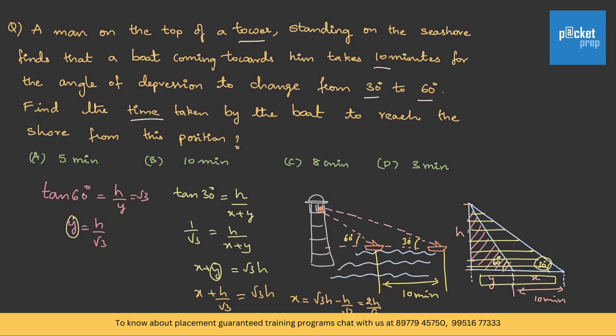We got the value of x and the value of y. The reason to find the value of x is we can find out the speed. I can write speed equals distance by time. If I take the distance to be x upon t1, I can say this is x value we found out, 2h by root 3, and how much time it took? 10 minutes. So this is h by 5 root 3. That is the speed of the boat.